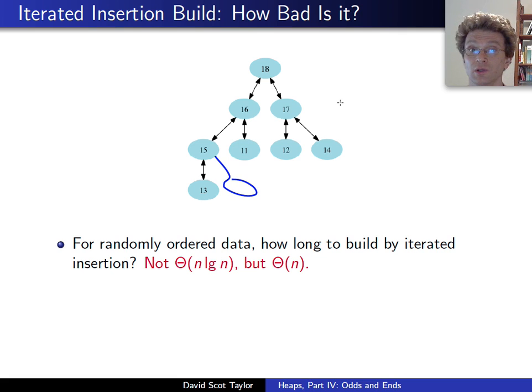So without proof, without reference, that I actually haven't seen it anywhere, I'm just going to say I kind of expect for randomly ordered data, for it to take linear time just to build a heap, even if you use the iterated insertion, which is discouraged.